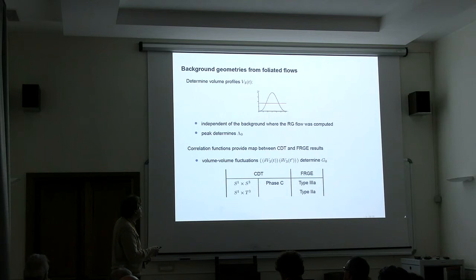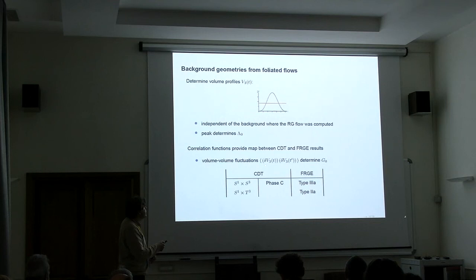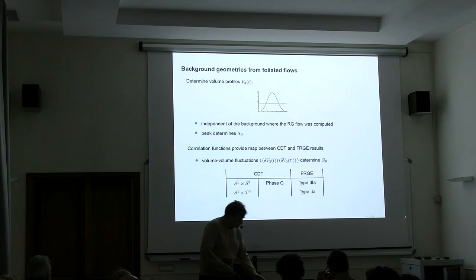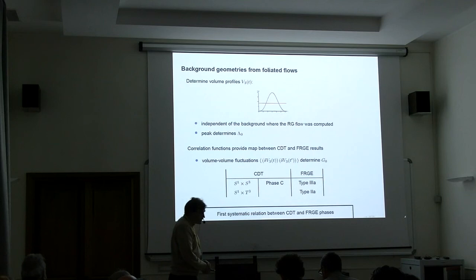This gives a map between phases that are seen in the Monte Carlo and the phases that we have in the functional renormalization group. Naturally, we can use this map to learn about other quantities. What is still on the agenda is looking at correlation functions in fluctuations in the three volume. What we already understand is that from this we can determine the renormalized value of Newton's constant. Here we have the first systematic relation between Monte Carlo simulations and continuum approaches to quantum gravity.